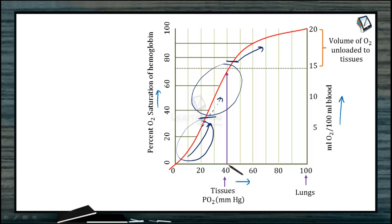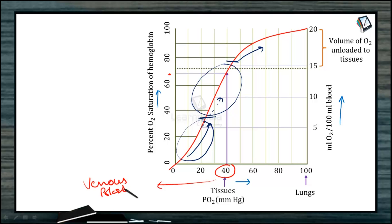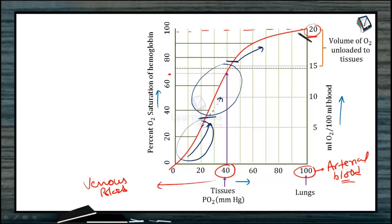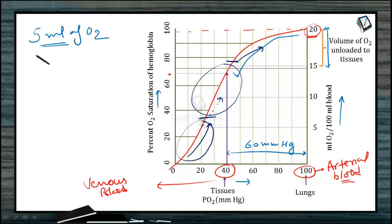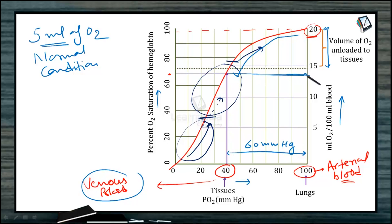At 40 mmHg pO2, hemoglobin is about 72–75% saturated — this is the partial pressure of oxygen in venous blood under normal conditions. At 100 mmHg it is nearly 100% saturated with 20 ml of oxygen — this is arterial blood. As arterial blood releases oxygen to tissues, the release is very slow initially; over a pressure difference of 60 mmHg we deliver only 5 ml (from 20 ml to 15 ml). Venous blood still retains around 15 ml, which is available as a reserve during sudden exertion.